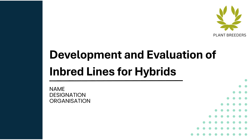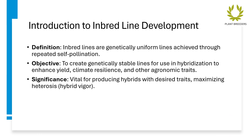Inbred lines are genetically uniform lines achieved through repeated self-pollination to create genetically stable lines for use in hybridization, to enhance yield, climate resilience, and other agronomic traits. They are vital for producing hybrids with desired traits, maximizing heterosis, or hybrid vigor.